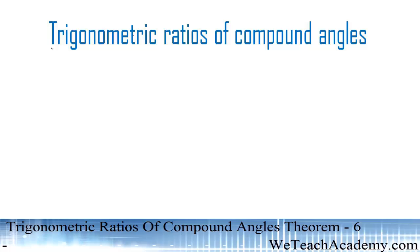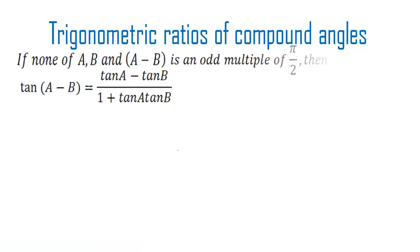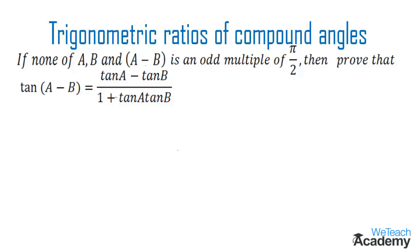Welcome to vdchacademy.com. In this presentation we are going to discuss trigonometric ratios of compound angles. We will prove this theorem: if none of A, B, and A minus B is an odd multiple of pi by 2, then prove that tan(A minus B) equals tan A minus tan B divided by 1 plus tan A tan B.